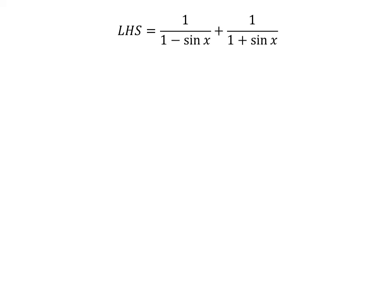Let us start from the left-hand side of the identity. LHS = 1/(1 - sin x) + 1/(1 + sin x).